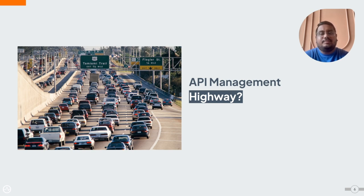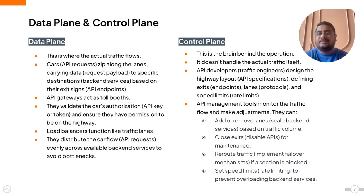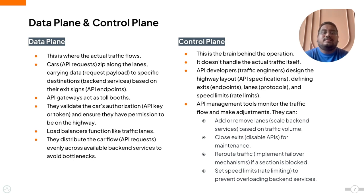To illustrate this, imagine an API management platform as a highway system. The data plane is the highway where API requests travel, and the control plane is the traffic management center — it doesn't handle the traffic itself but monitors and adjusts the flow to ensure smooth operations. In this analogy, the data plane is like the highway itself where traffic flows. Each vehicle represents an API request from different applications and consumers, similar to passengers in a car representing request payloads. These vehicles travel towards specific destinations, much like APIs communicating with various backend services, represented by highway exits.